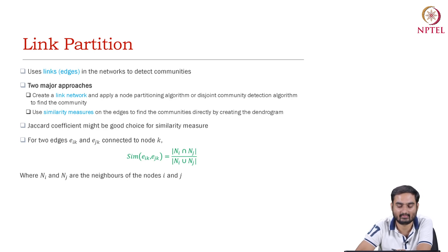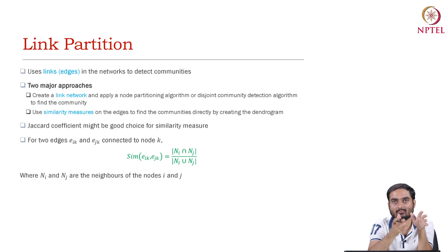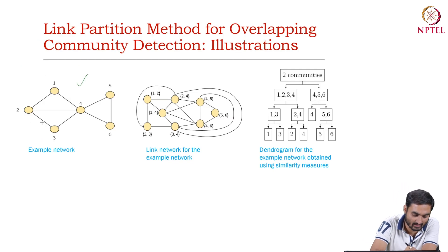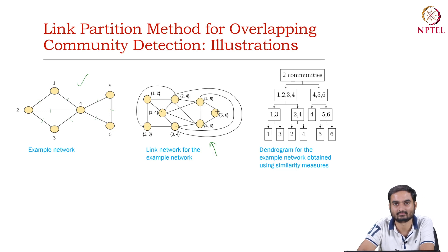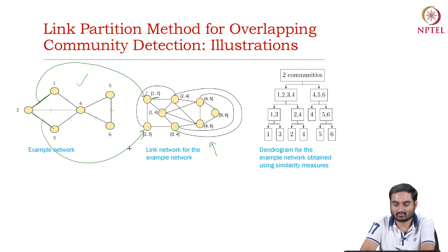The next method is called link partition. In link partition, we create from a normal graph a dual graph. In a dual graph, the edges in the original graph become nodes in the dual graph. For example, if the original graph has edges 1 through 8, the dual graph will have 8 nodes — edge (1,2) becomes one node, edge (2,3) becomes another node. This is sometimes also called a line graph.